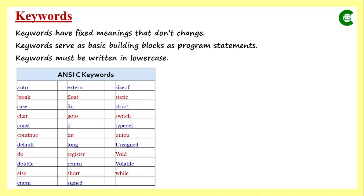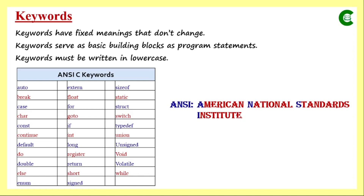Whenever we give a name to any variable, we must remember that we should not use any name from this keyword list. Any user-defined name should not be a keyword. ANSI stands for American National Standards Institute, which is an institute that sets standards applicable for C programming language. Your compilers may support some extra keywords, so verify from the compiler manual, but this is the list of keywords that we mostly use.